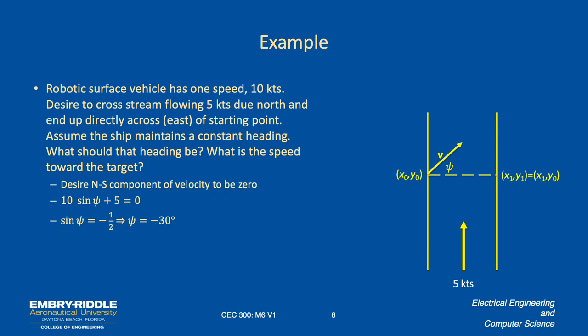So the speed towards the target would be 10 times the cosine of minus 30, which is the same as the cosine of 30. The cosine of 30 is root 3 over 2. There's a couple of tricks you ought to know - you ought to know the sine and cosine of 30 degrees, 45 degrees, and 0 and 90 degrees. Root 3 over 2 is 0.866, so the thing's going 8.66 knots in the east-west direction.